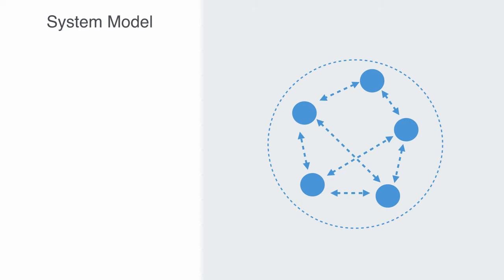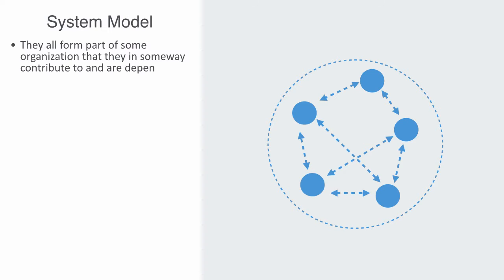A system may be understood as a set of parts, called elements, and the relations between those parts through which the elements are interdependent in forming some overall macro organization. Unlike a set of independent objects, the elements within a system are in some way interdependent. They all form part of some organization that they in some way contribute to and are dependent upon. Systems operate within some environment and have a boundary that defines the internal set of interdependent elements as distinct and in some way autonomous from their environment.